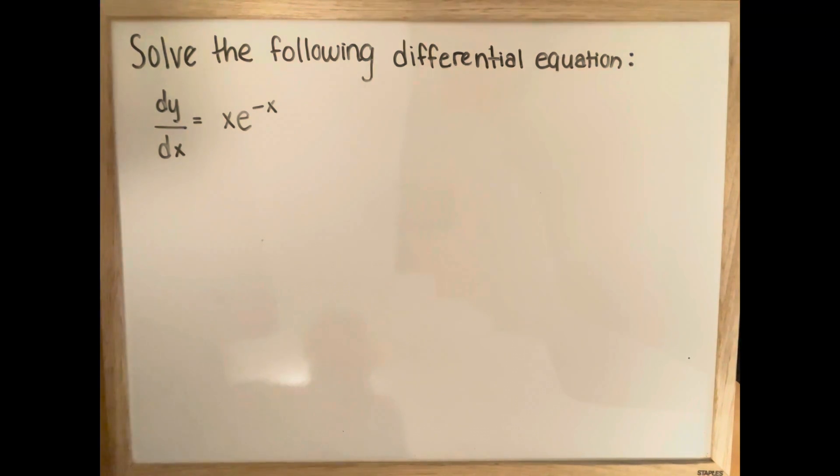Solve the following differential equation. dy over dx is equal to x multiplied by e to the power of negative x.